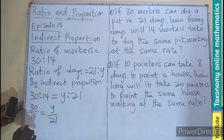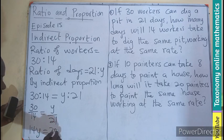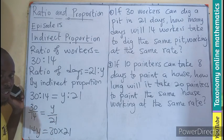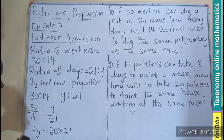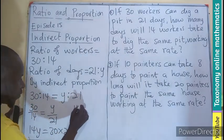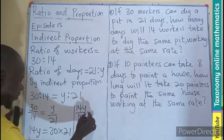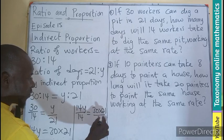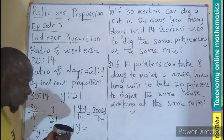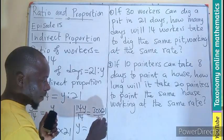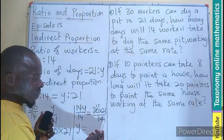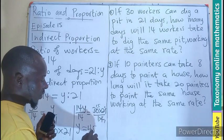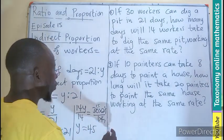We can also cross multiply to have 14Y equals 30 times 21. Since two ratios said to be proportional have equal cross products, we divide both sides by 14. We know 2 goes into 14 seven times, and 2 goes into 30 fifteen times. Then 7 goes into 21 three times, giving us 15 times 3, which equals 45. So Y equals 45.